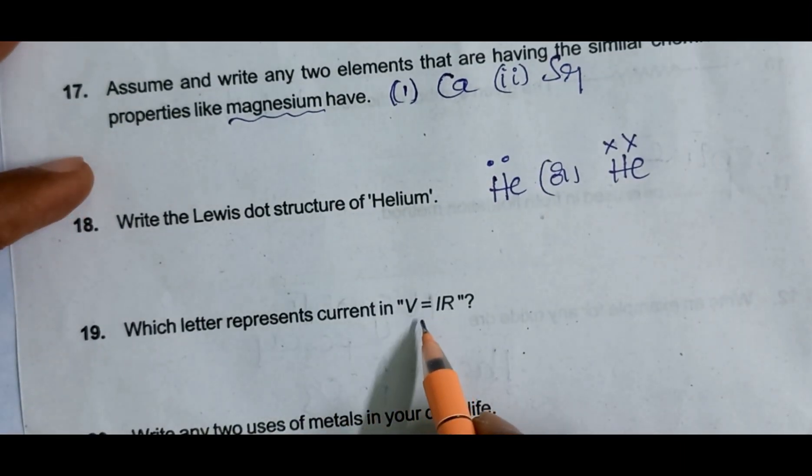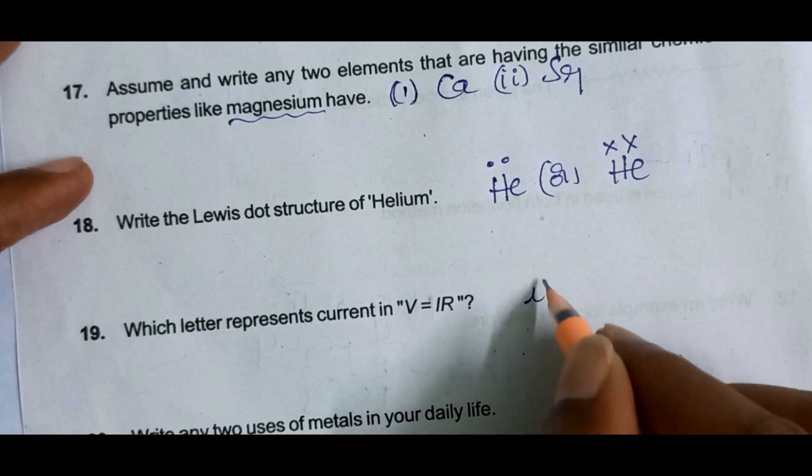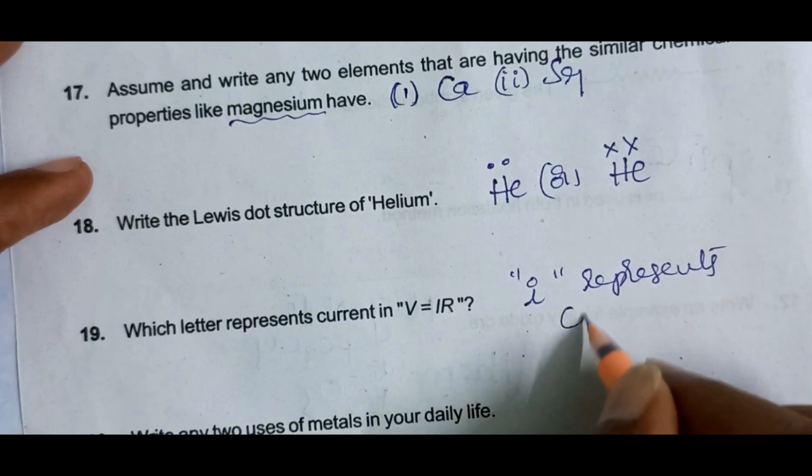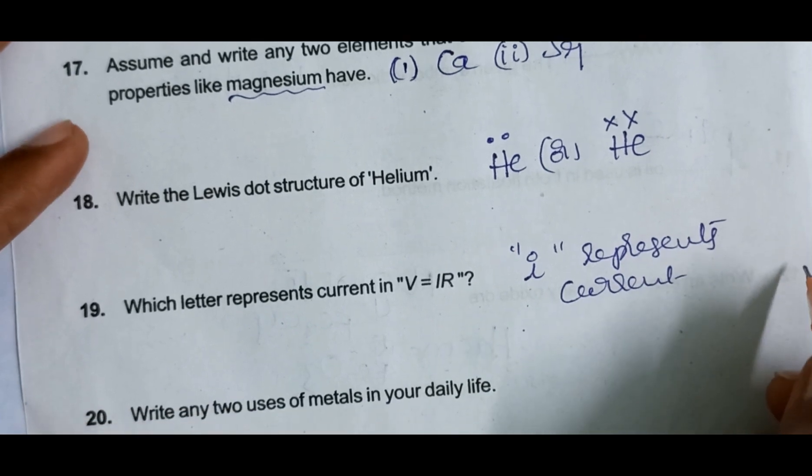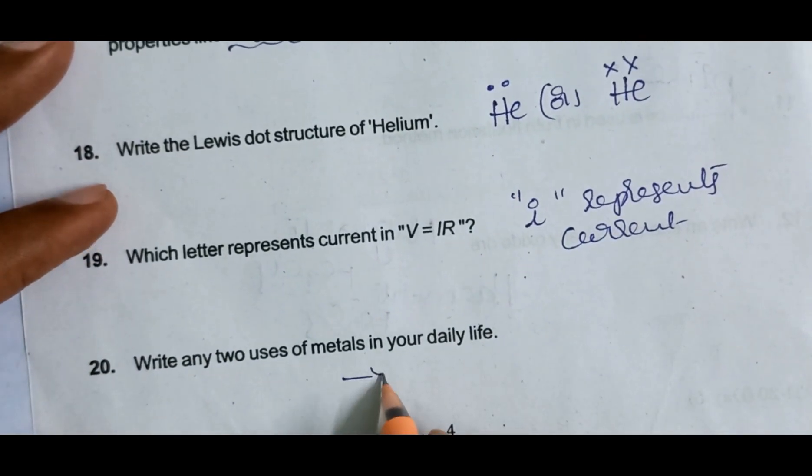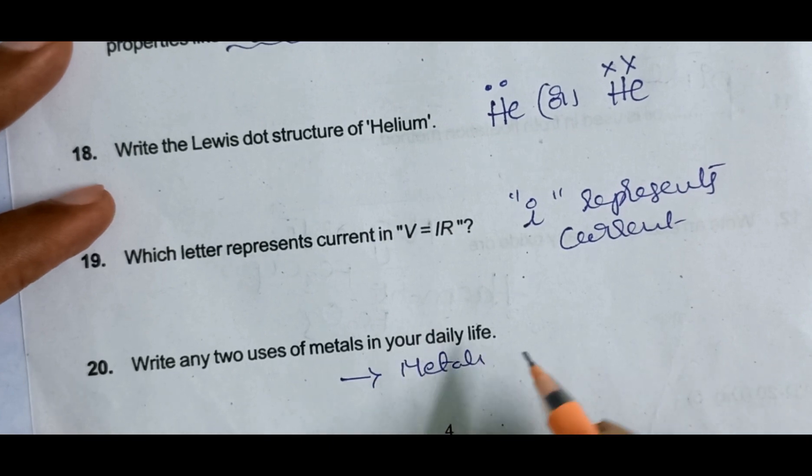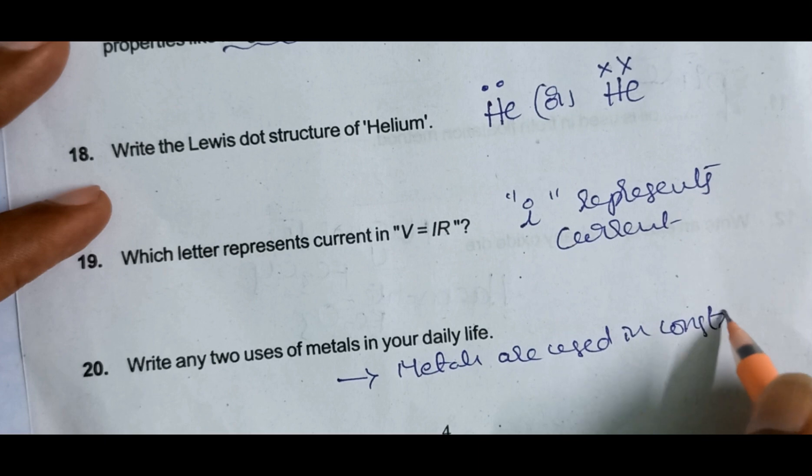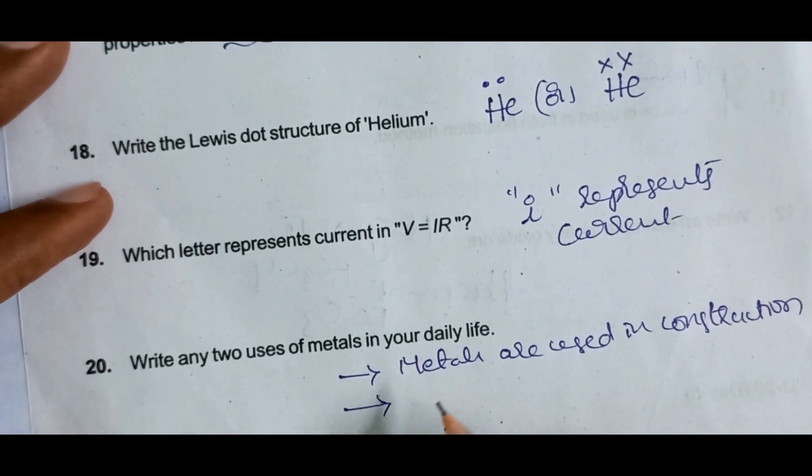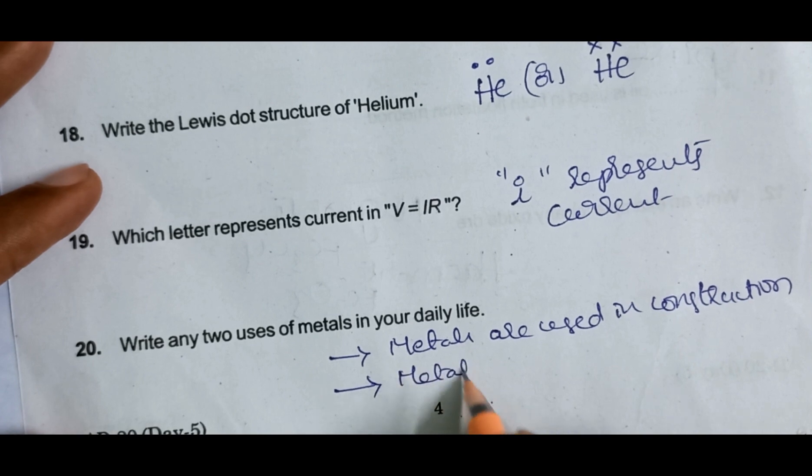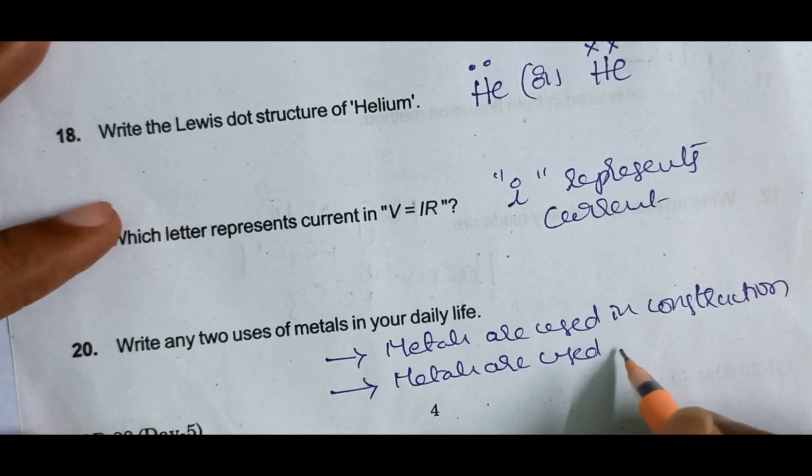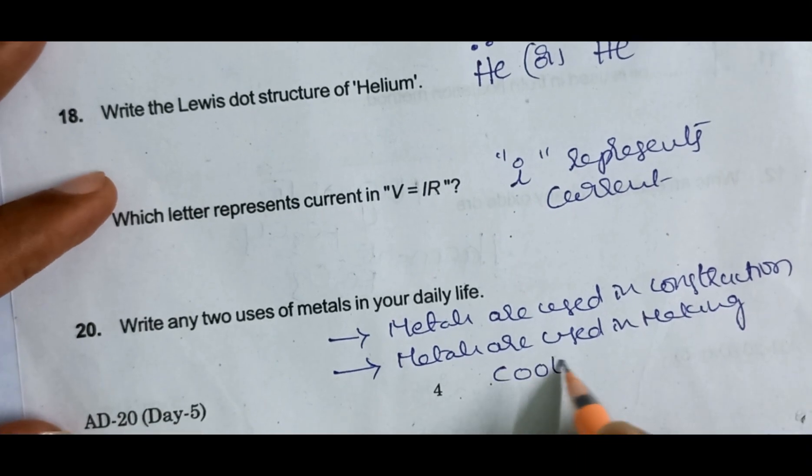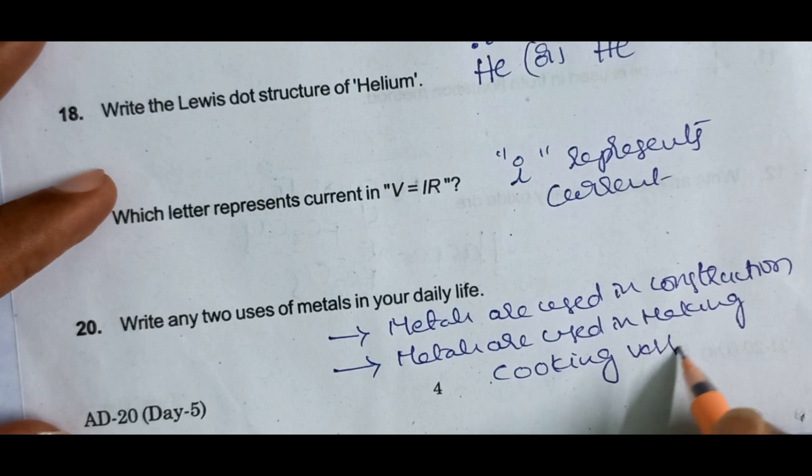Which letter represents current in V = IR? Letter I represents current. Write any two uses of metals. Metals are used in making cooking vessels - general question.